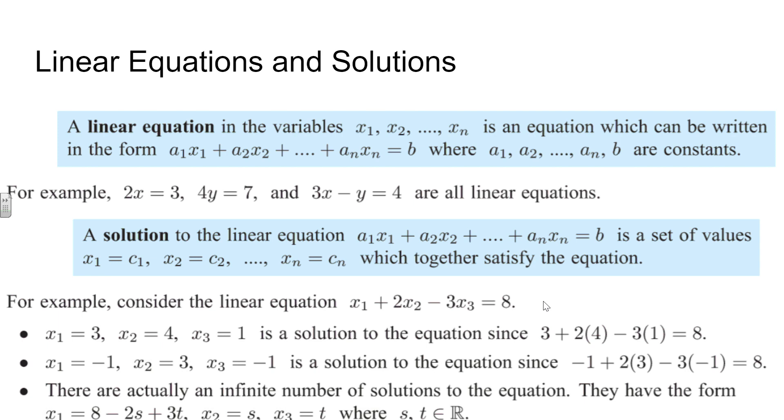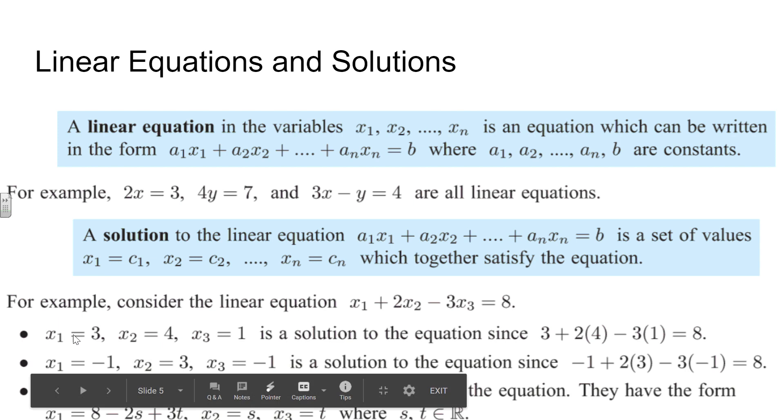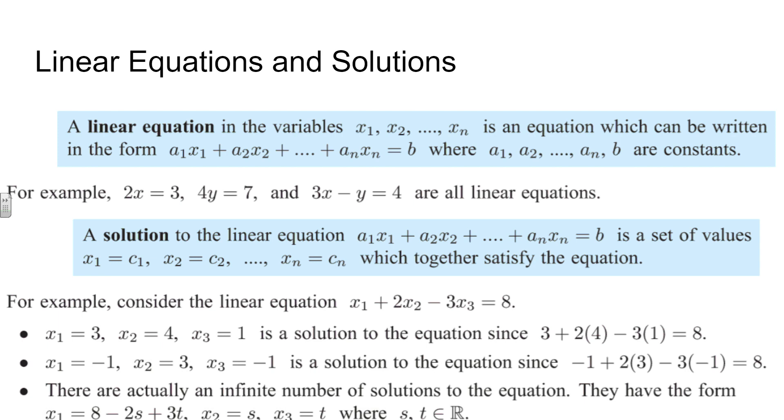So if we look down here, for example, consider the linear equation x1 plus 2x2 minus 3x3 equals 8. If we were to check to see if (3, 4, 1) was a solution, all we'd have to do is plug it into the equation and we'd get 8 equals 8. Therefore that is a particular solution to this system. If we tried x1 equals -1, x2 equals 3, x3 equals -1, we would also get 8, therefore that would also be a solution to the system.